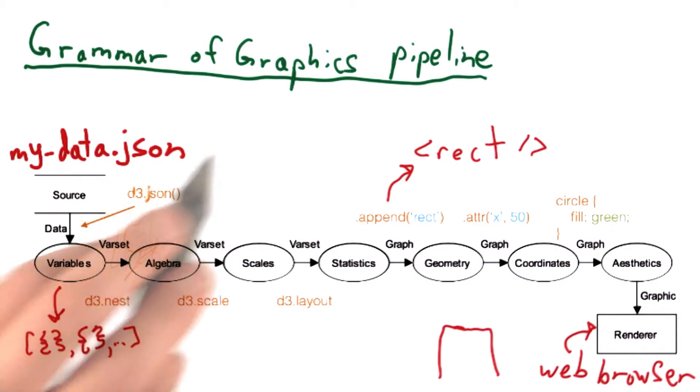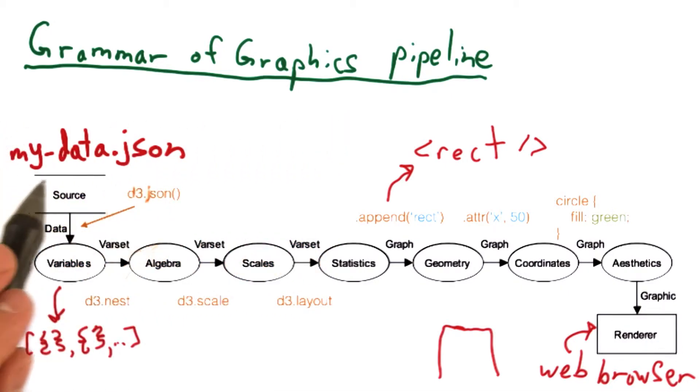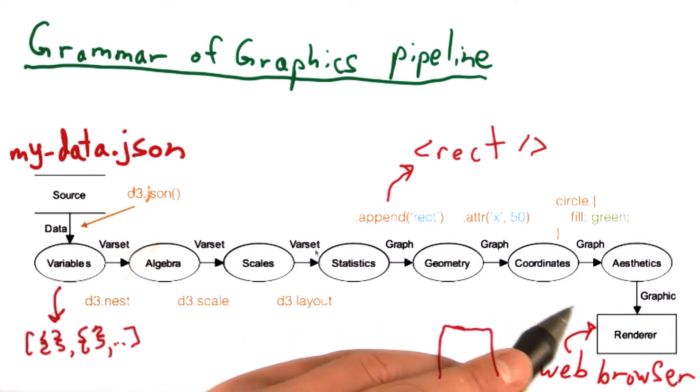At its most fundamental level, the grammar of graphics makes the distinction to separate content or data from the aesthetic. In this case, the web page we're visualizing.